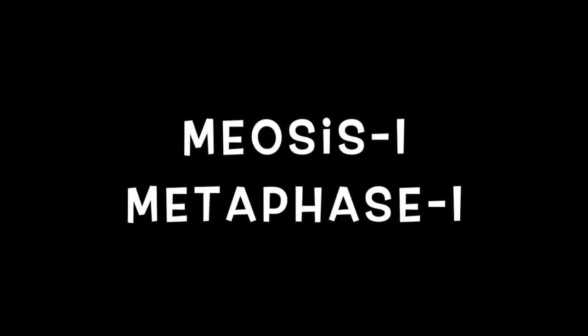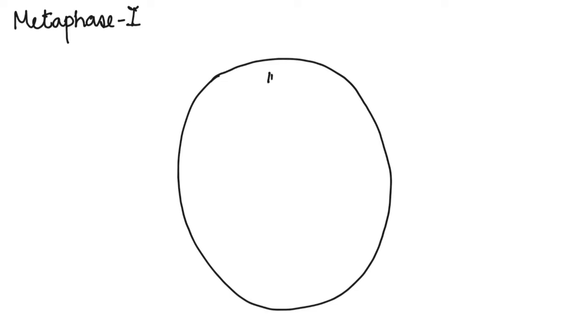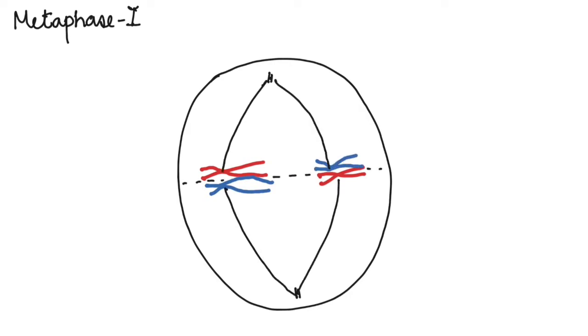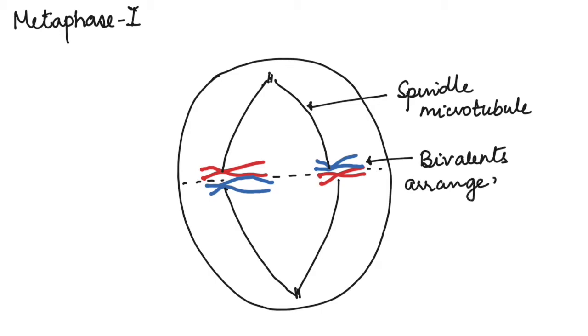Next is metaphase. In metaphase, the nuclear membrane has completely disintegrated and the spindle microtubules move ahead to attach to the centromere of the chromosomes. The chromosomes align on the equatorial plate in their pairs. That is the homologous pairs or the bivalents are arranged on the equatorial plate.